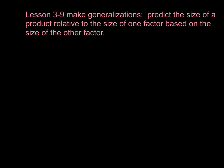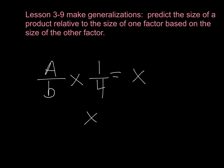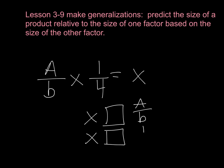Now suppose that you multiply a fraction — we'll call that fraction AB, since we don't know what the numbers are. It is a fraction, so it will be less than 1. Suppose we multiply this fraction by another fraction that's less than 1, say 1 fourth. Will the product x be less than or greater than the factor AB? And will the product x be less than or greater than the factor 1 fourth? Make your predictions.